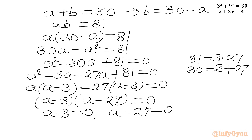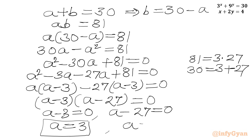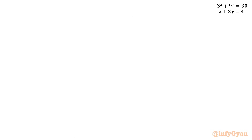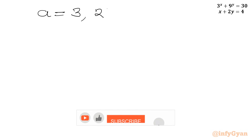Factoring, we get two values of a: a = 3 and a = 27.